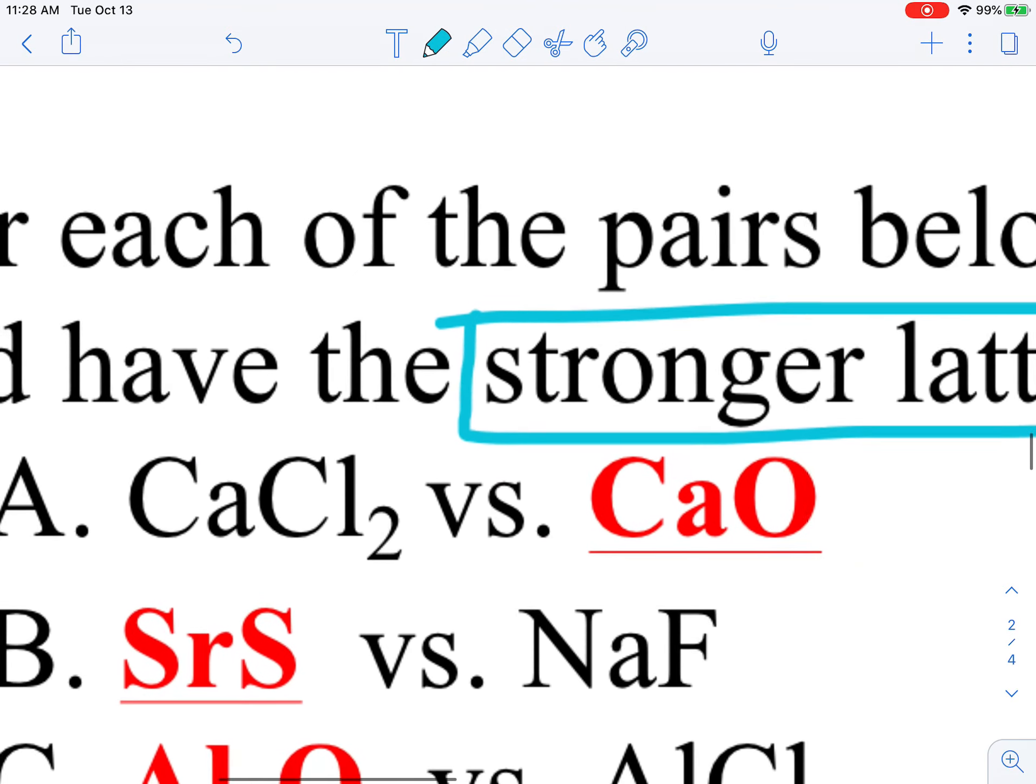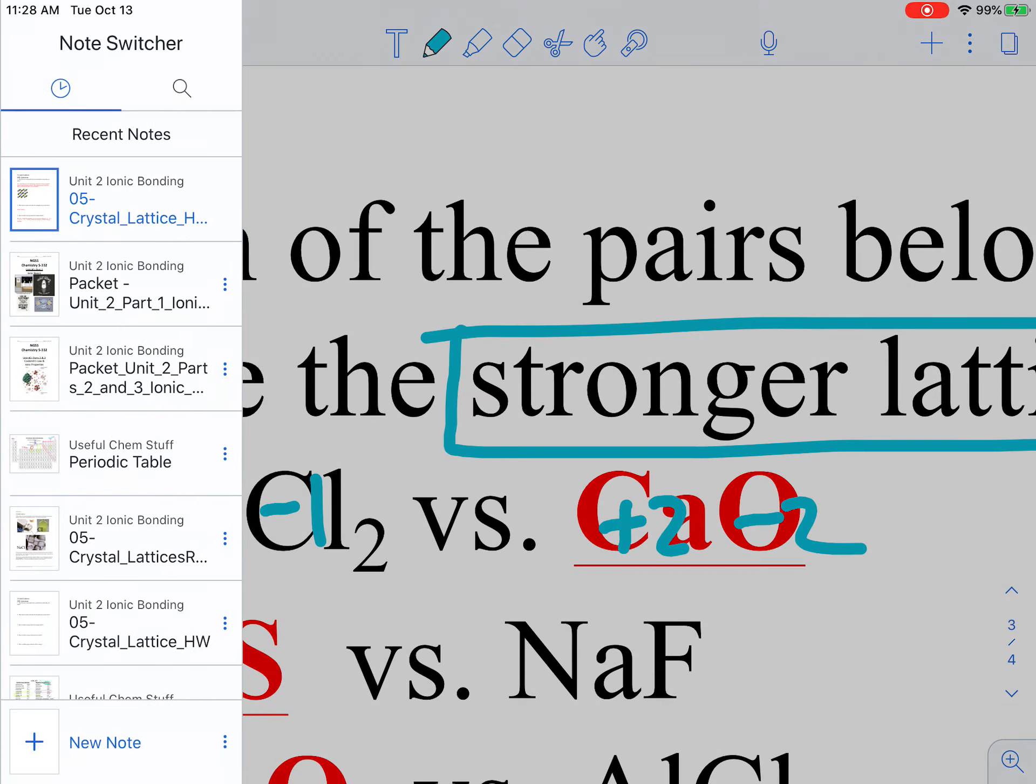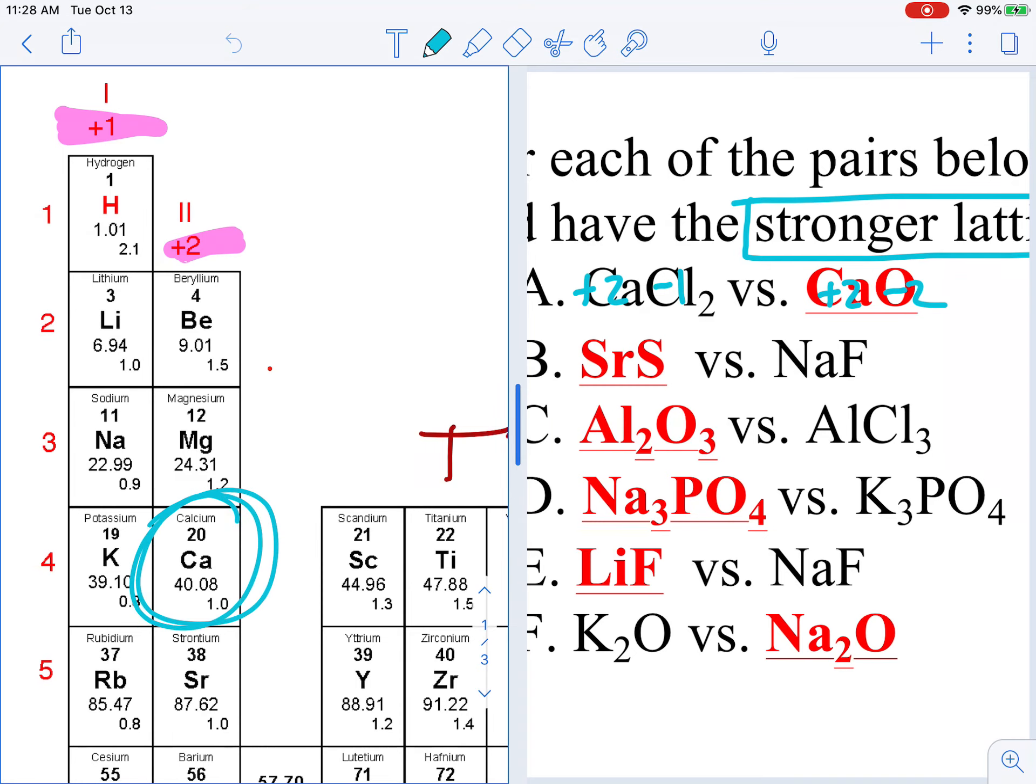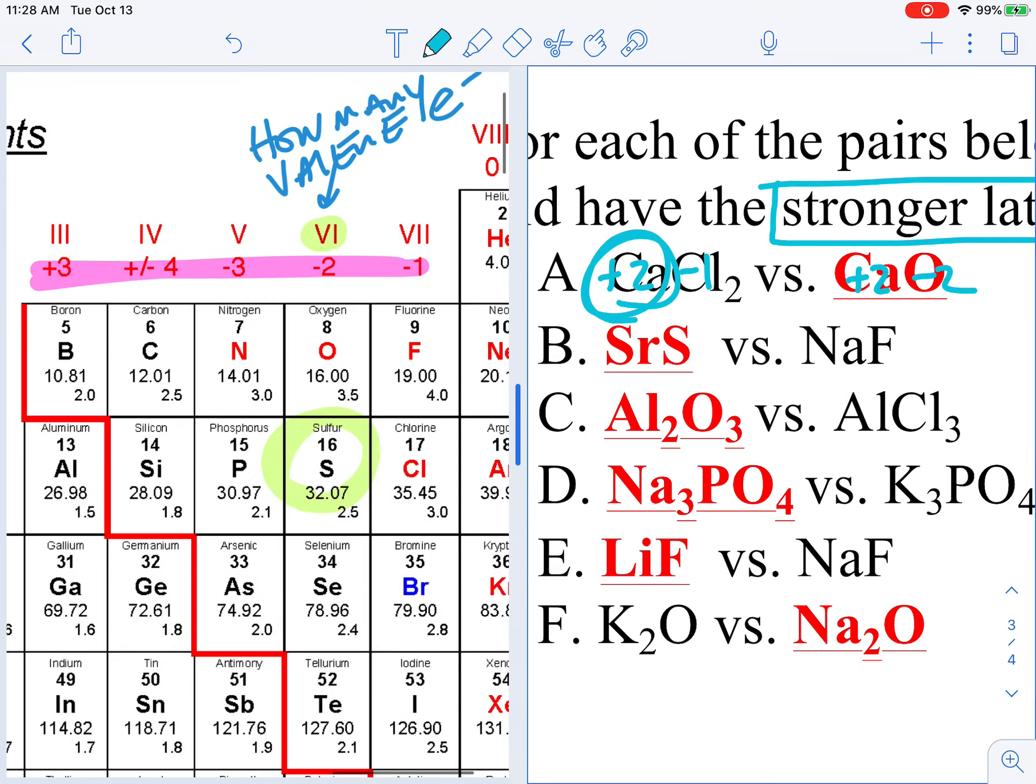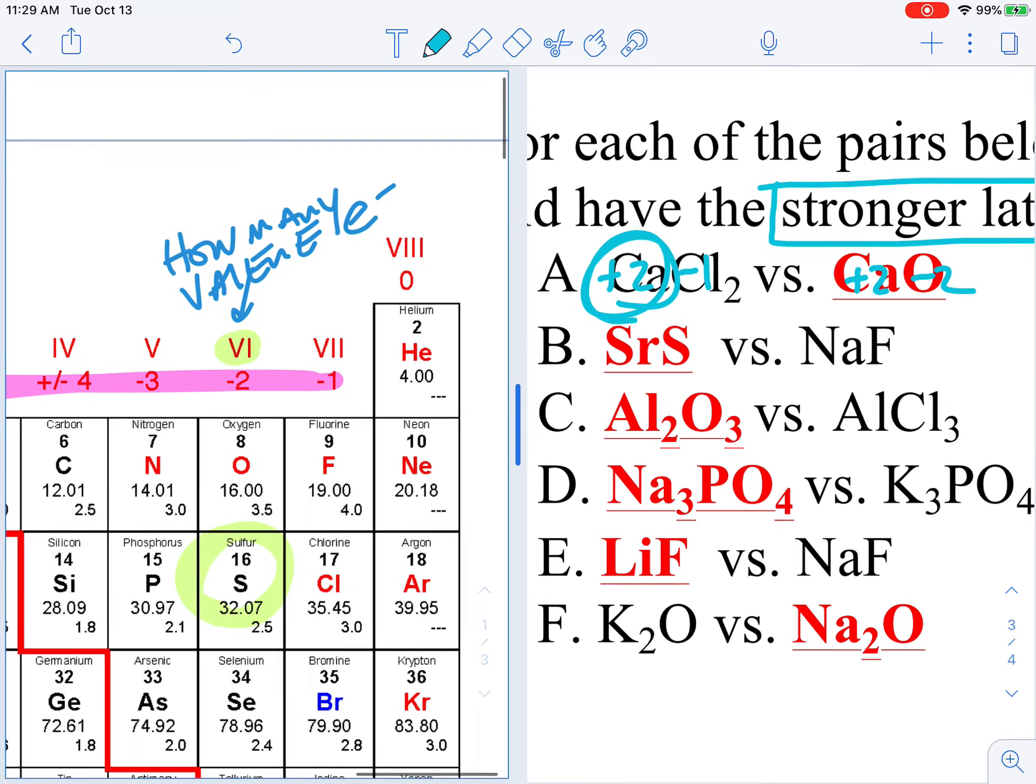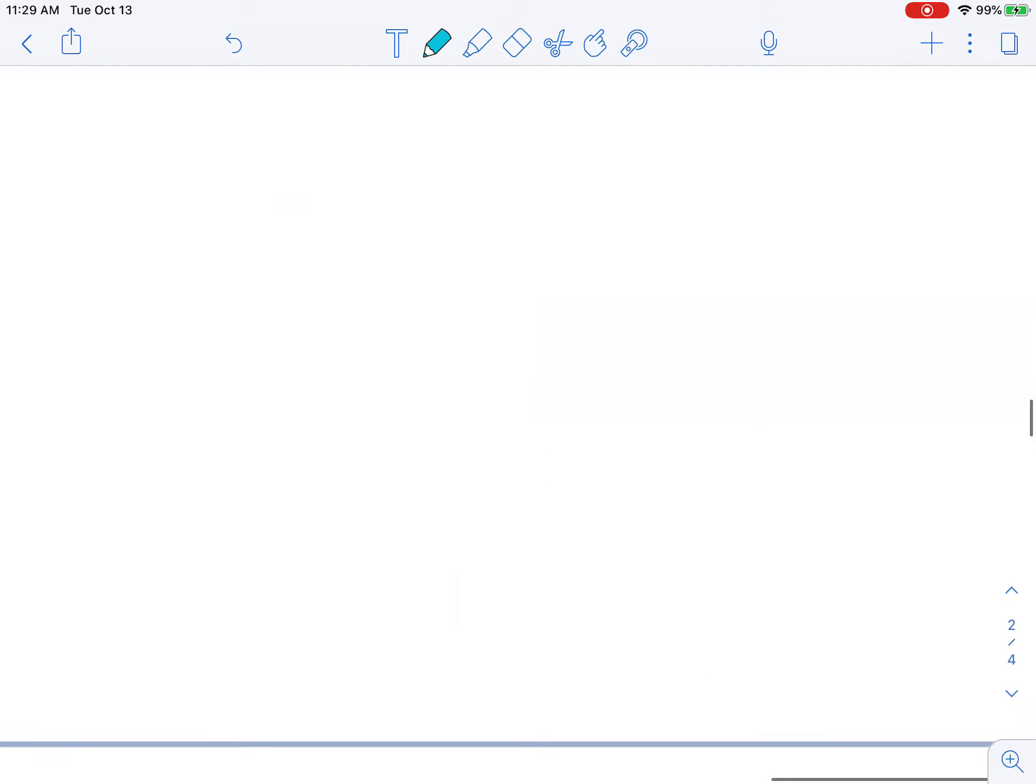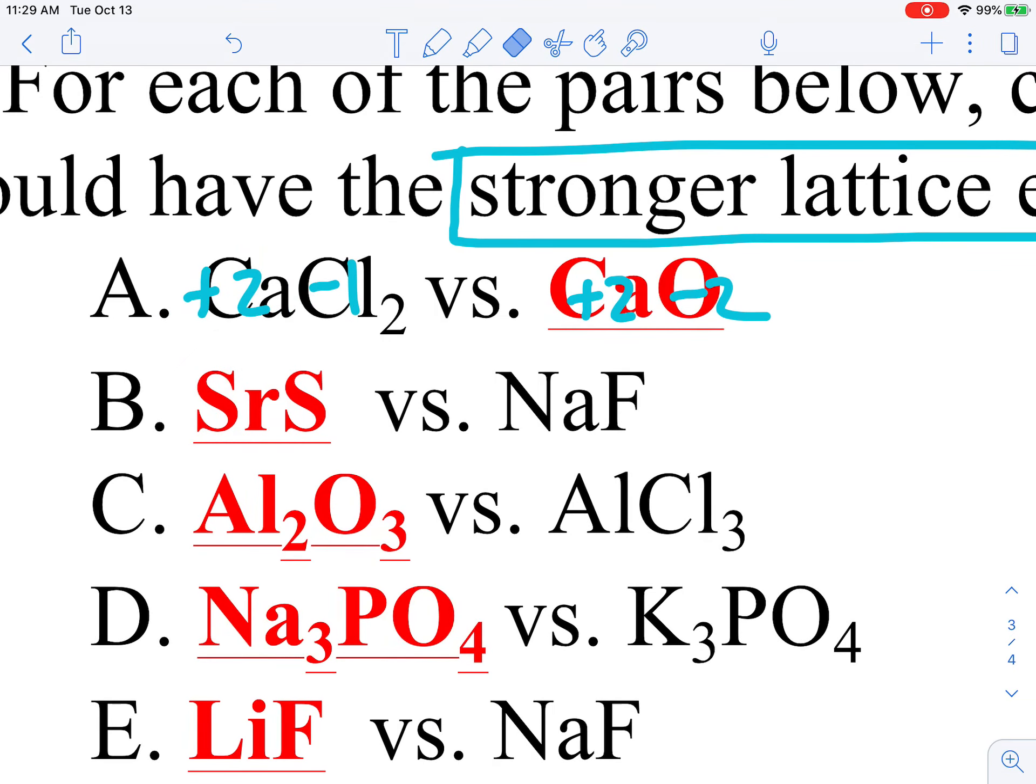So let's rank these. I have to get charges. Plus two minus one, plus two minus two. Mr. Sconey, where did you get those charges from? I was on my periodic table. I found calcium. I found it's a plus two. So calcium here. That's how I got to be a plus two. And then chlorine over here, minus one. So that's where I'm getting the charges from. Nothing new. If you're still stuck on that, that's something we definitely need to talk about.